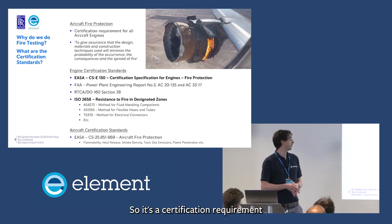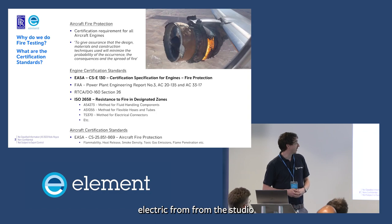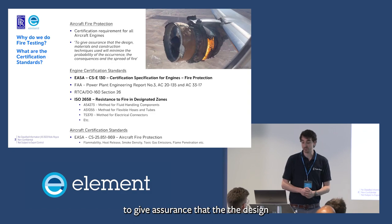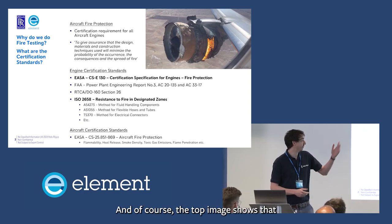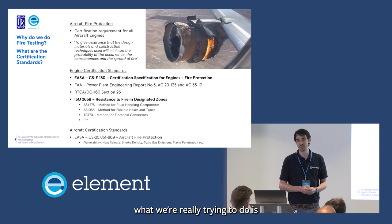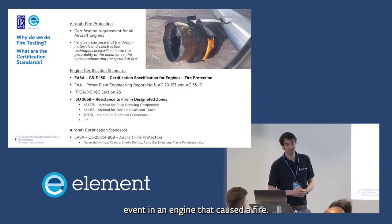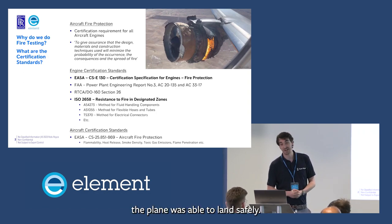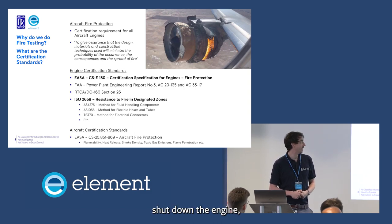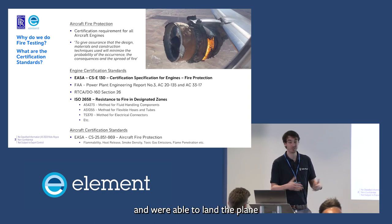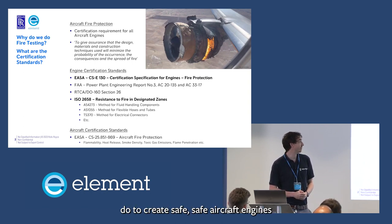So why do we do fire testing? It's a certification requirement for pretty much all aircraft engine components. It's really to give assurance that the design will minimise the probability of occurrence, the consequence, and the spread of fire. What we're really trying to do is keep everyone safe in the air if the worst happens. That image shows a fan blade off event in an engine that caused a fire — fortunately the plane landed safely about 24 minutes later, with the flight crew shutting down the engine and preventing the spread of fire.